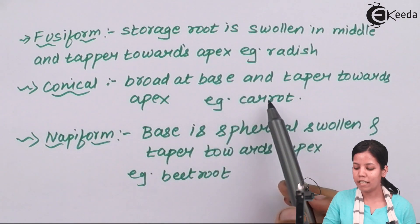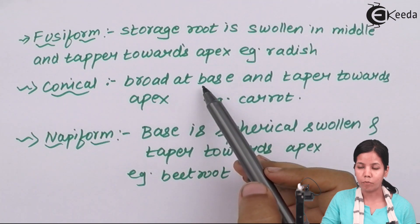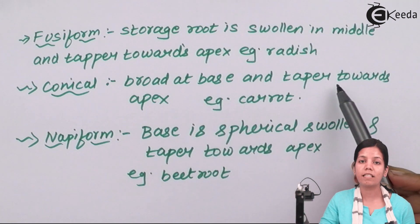An example of conical form is carrot. For carrot, the base is broad and it tapers towards the apex. So the base is the upper side of the carrot which is broad, and when it comes to the downside or the lower side, it becomes narrow or small.